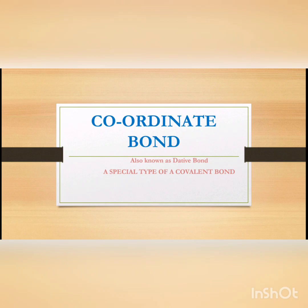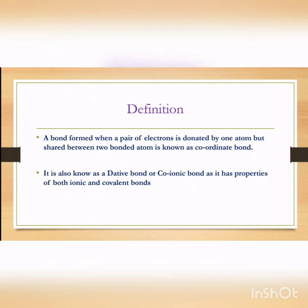The next topic for today is coordinate bond. Coordinate bond is also known as dative bond. You can also refer to it as a special type of covalent bond. A bond formed when a pair of electrons is donated by one atom but shared between both the bonded atoms is known as a coordinate bond. It is also known as a dative bond or a co-ionic bond.